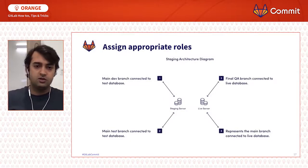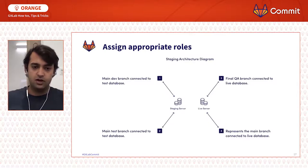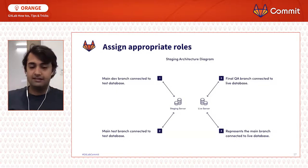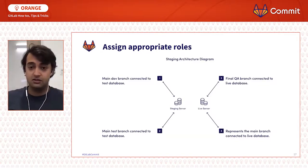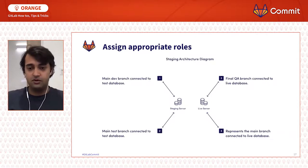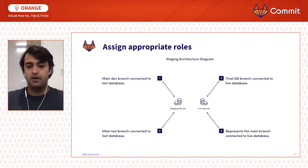In our system architecture diagram, the development/staging branch is connected to the test server and test database. The main test branch is also connected to the test database and server. The final QA branch and final main branch both have live servers, so users or testers are communicating directly with the live database and live data.